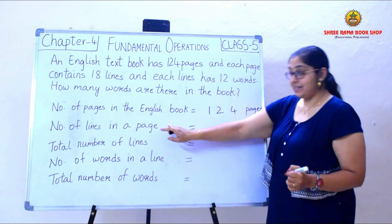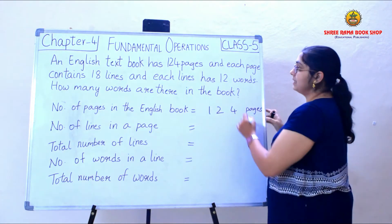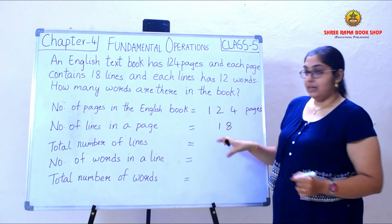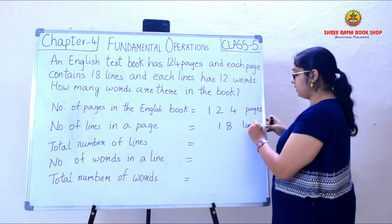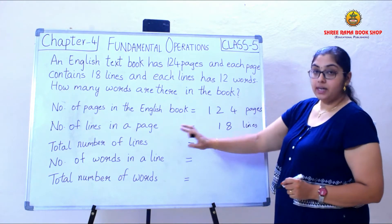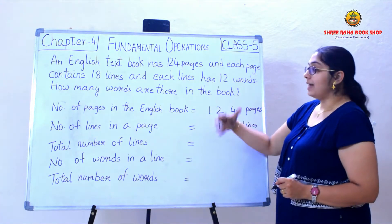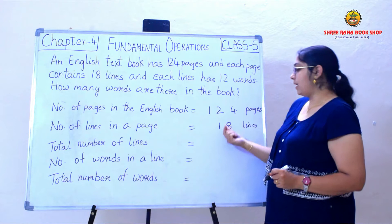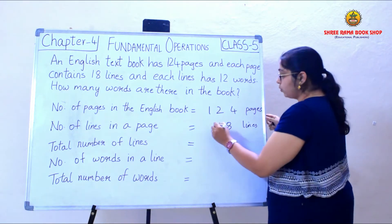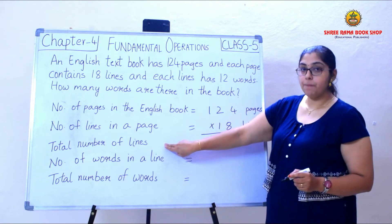The number of lines in each page is 18 lines. Now I need to find out the total number of lines. So how will I find out how many lines are there in the book? I need to multiply 18 with 124. When I multiply 124 and 18, I will be getting the number of lines in the book.